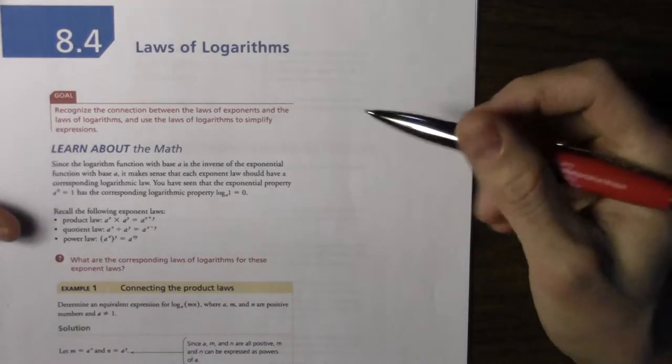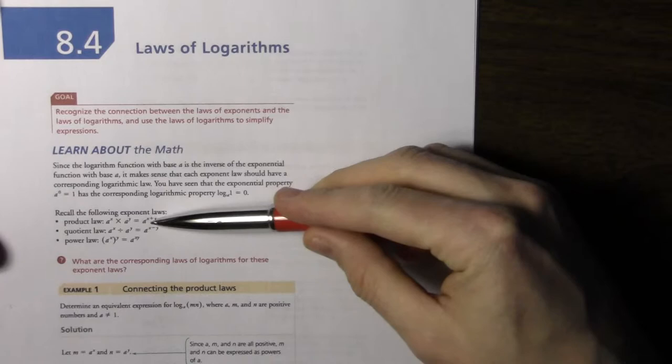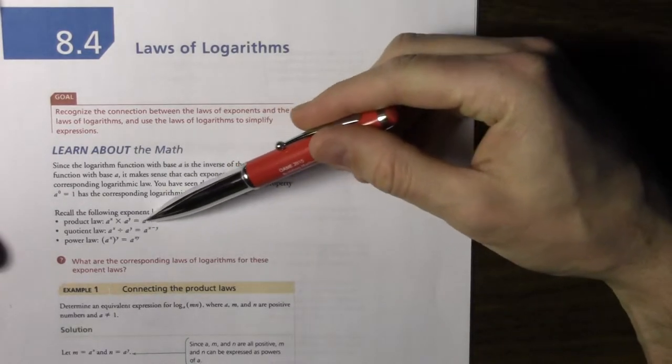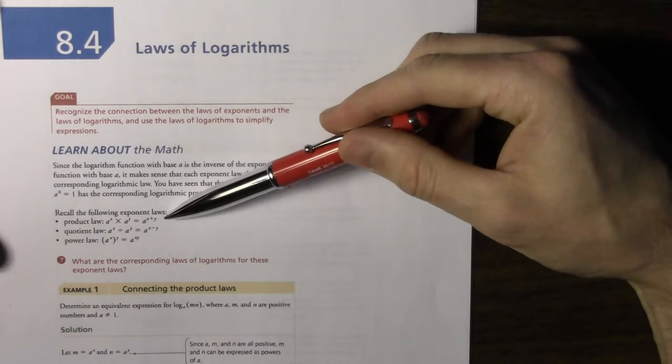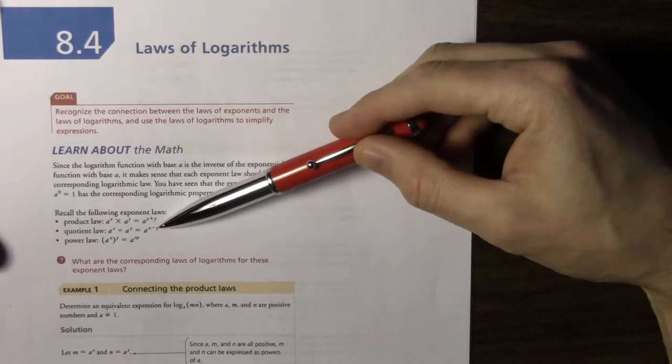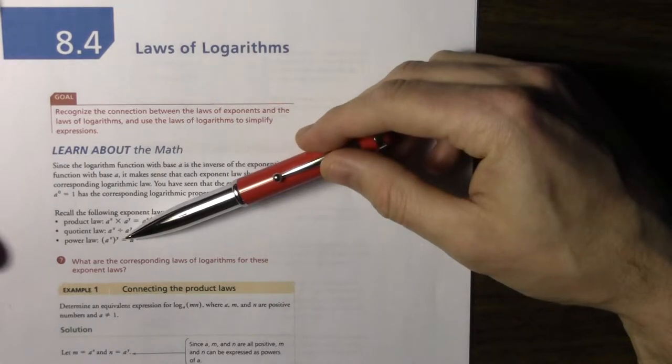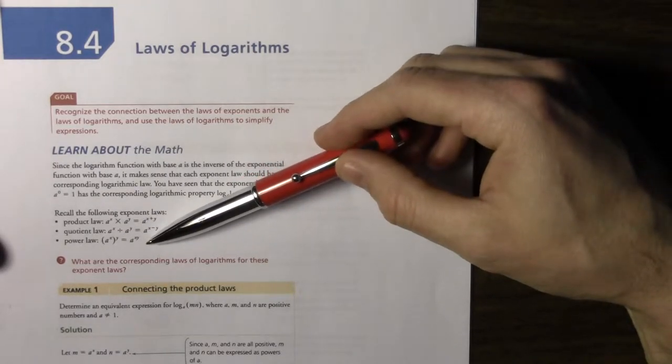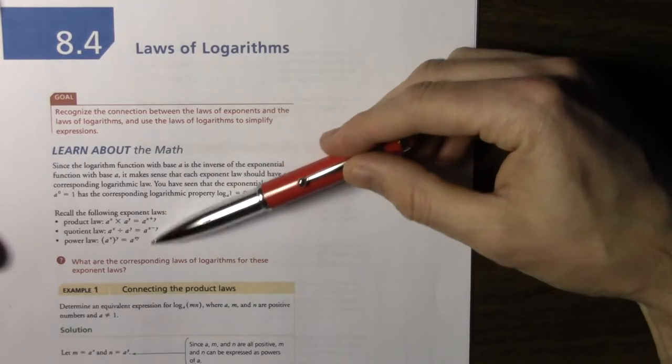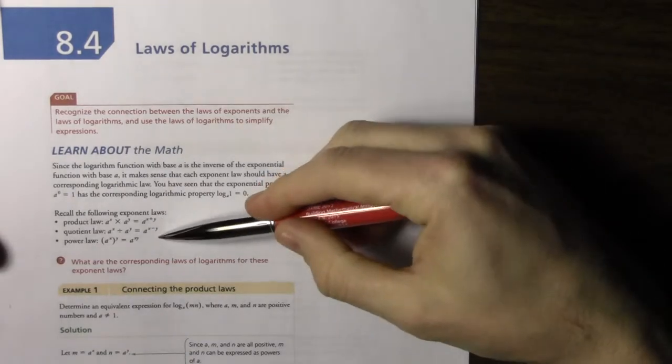If you guys remember the exponent laws which are down here, any power with the same base, when you're multiplying the powers you can add the exponents. When you're dividing the powers you can subtract the exponents and when you have a power raised to another exponent you multiply those exponents. Okay, so this is a review from the end of grade 10 and a lot of 11.